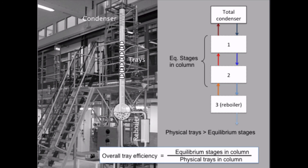Note that it's the equilibrium stages inside the column we deal with. That's because the reboiler is a perfect equilibrium stage, and if we have a partial condenser, that is also a perfect equilibrium stage.